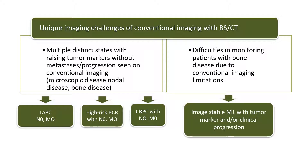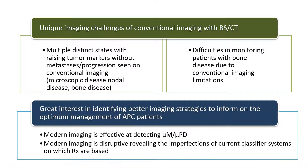We find a similar problem in patients who seem to be progressing clinically, but their imaging doesn't seem to be changing. This is quite a well-recognized issue. There's a great deal of interest in identifying strategies to better inform on the optimal strategies for these men. We know next-generation imaging is effective at depicting microscopic metastatic disease or microprogressive disease. When we use these technologies, we realize that there are imperfections in our classifier systems, which in fact drive management.